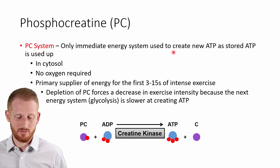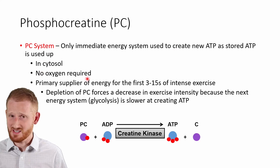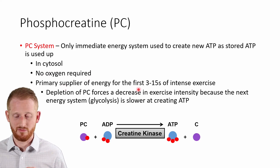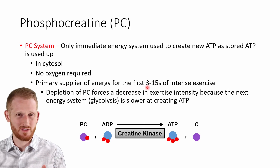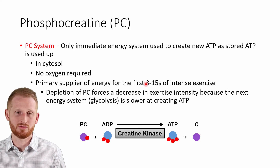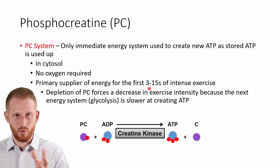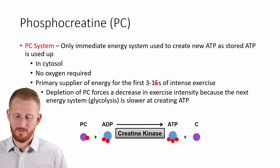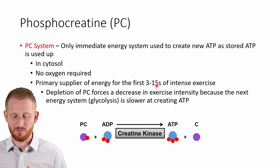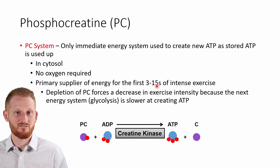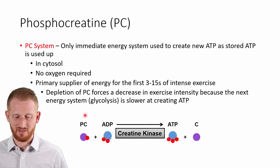Phosphocreatine is an immediate energy system used to make new ATP from ADP — the broken-down ATP molecules. This happens in the cytosol and does not require oxygen, so it is completely anaerobic. Our phosphocreatine stores are able to fuel intense exercise from about the three-second mark to about 15 seconds. Before three seconds we're still using stored ATP, but starting around one to three seconds, once we start depleting that stored ATP, phosphocreatine takes over as the primary energy source up to about 15 seconds. At that point we move away from immediate energy sources toward fast energy sources like glycolysis.